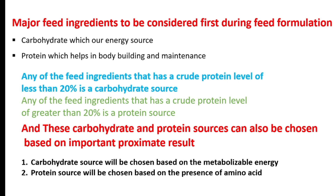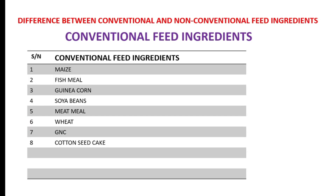This is the basis we are going to take when it comes to the selection of our carbohydrate as well as our protein sources — these things are very important. The next thing we are going to look at is the difference between conventional and non-conventional feed ingredients.